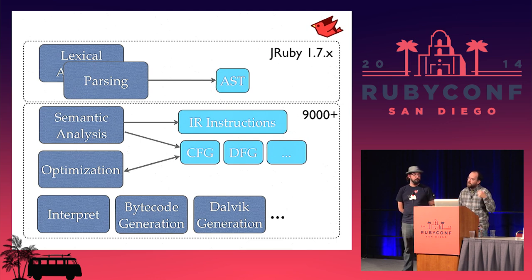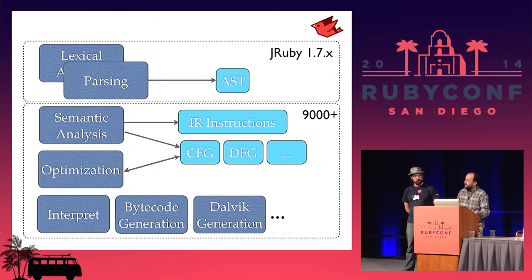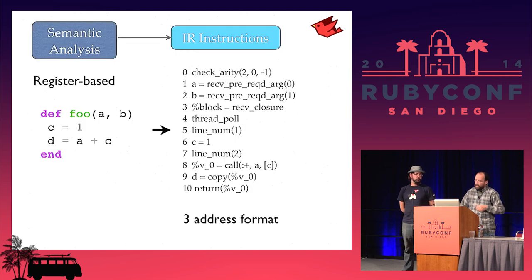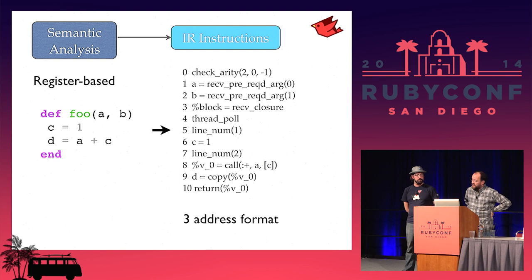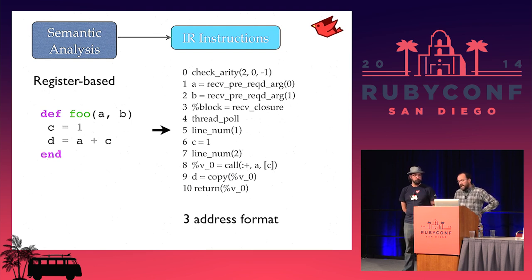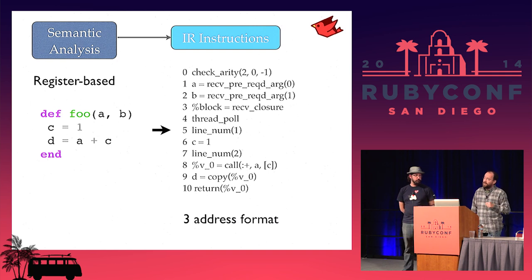In 1.7, we parsed code and generated a syntax tree, and the interpreter and JIT just walked that tree. In the 9000 world, we generate virtual machine instructions representing Ruby semantics and supplementary data structures like a control flow graph. Once we've made these, we enter the optimization phase, running compiler passes that mutate these data structures, and then interpret those instructions. Once things get hot enough, we pass it off to bytecode generation. It's very similar to what the JVM itself does, but at a layer above the JVM. Looking at the first instructions: instruction zero checks for two required arguments; lines one through three bind local variables to the passed parameters including a special block variable; line eight calls the method plus on receiver A with argument C — A plus C. Pretty easy to read.